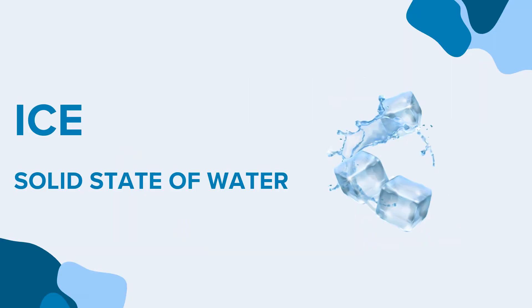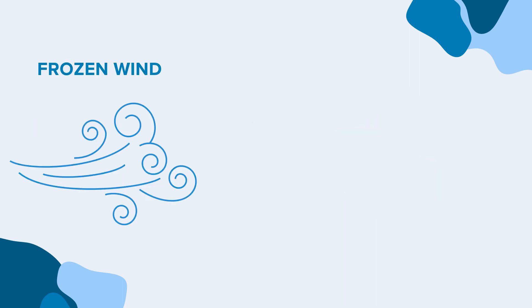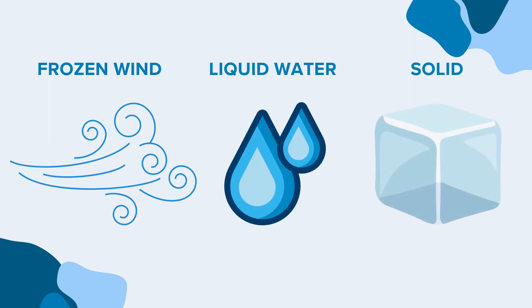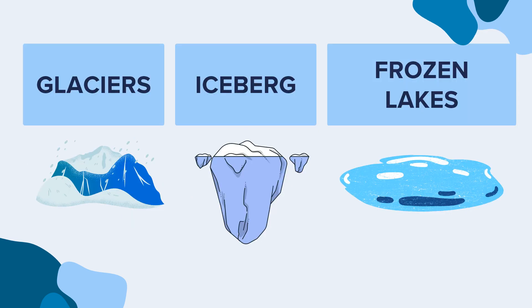What is ice? Ice refers to the solid state of water, which means ice is a frozen form of water. Ice can be formed due to frozen winds that tend to convert transparent liquid water into becoming solid. Ice is solid, transparent and can take various forms such as cubes, sheets or crystals. It is commonly found in glaciers, icebergs, frozen lakes and as frost on surfaces.